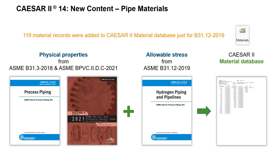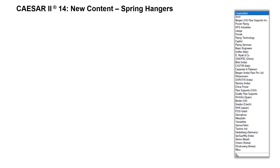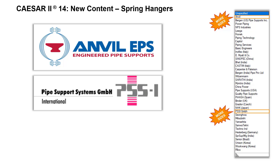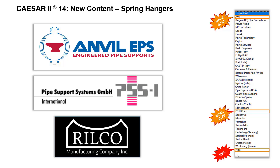New piping materials were added and properties of existing ones were updated per the new piping codes. 119 material records were added for use with B31.12. CAESAR 2.14 also expanded the spring hanger selection available by adding new sizes to the data from Anvil Engineering Pipe Supports and Pipe Support Systems GmbH International, and by adding another pipe support manufacturer to the database: Rilco Manufacturing Company.